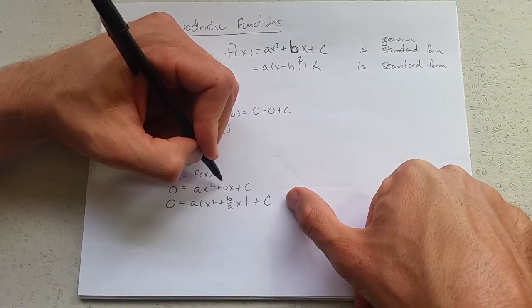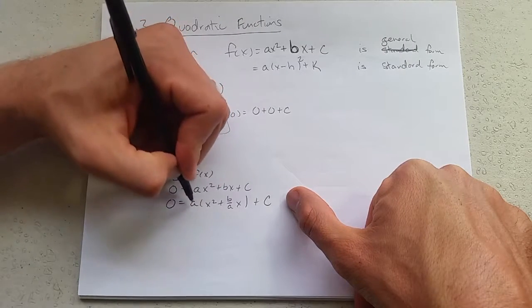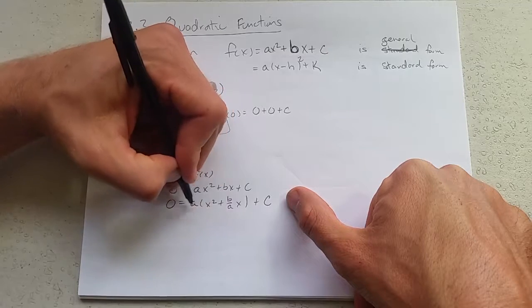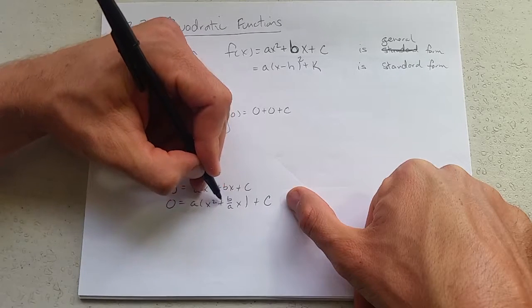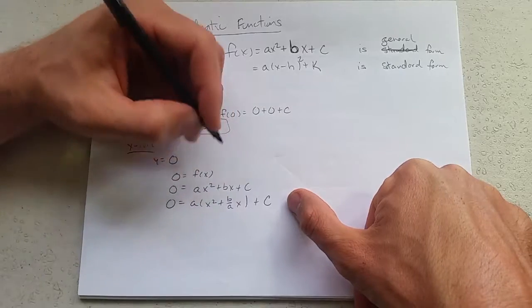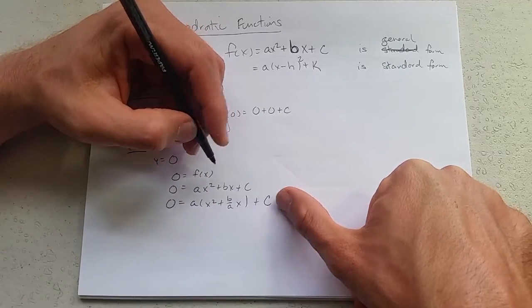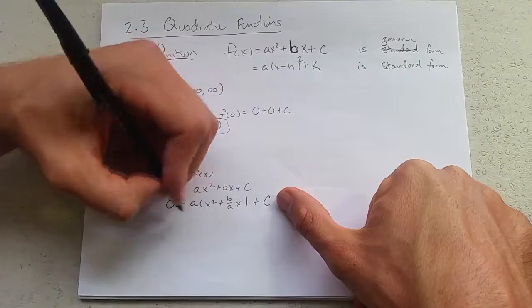Now, next step we're going to subtract c and then divide by a. So we subtracted c, so we have minus c, and then divide by a.